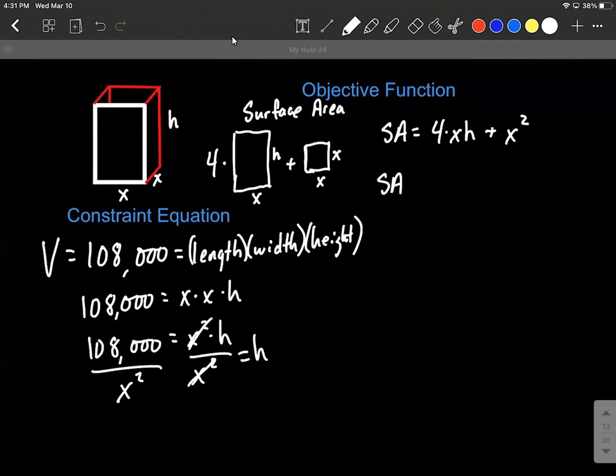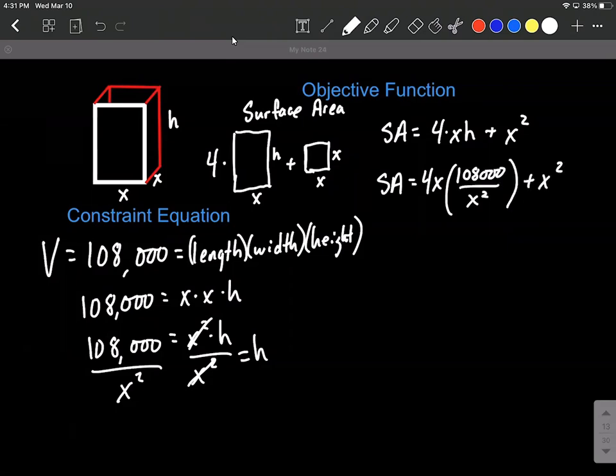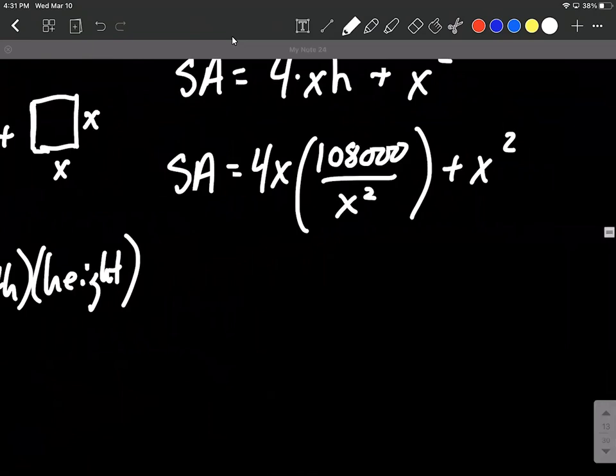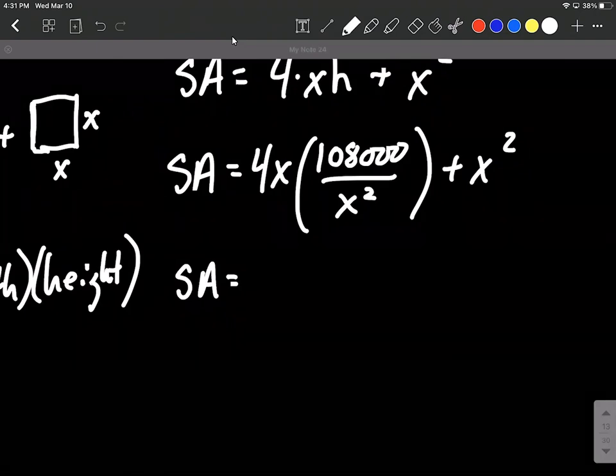Next, we can bring our surface area function along. We're gonna replace the H with 108,000 divided by X squared. So we substituted in there using H equals 108,000 divided by X squared. From here, let's do a little bit of reducing down. So just moving over here. We eventually wanna take the derivative, but if we can make this look a little bit nicer, we can make taking the derivative a little bit easier. So I'm gonna visualize this as being over one. So we have four times 108,000 makes 432,000. And then we have an X in the denominator and an X in the numerator, actually two X's in the denominator. So one of those can cancel out with the X that's up in the numerator. So this will put this over X plus X squared.